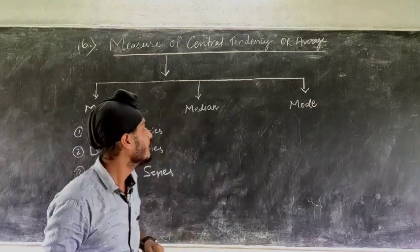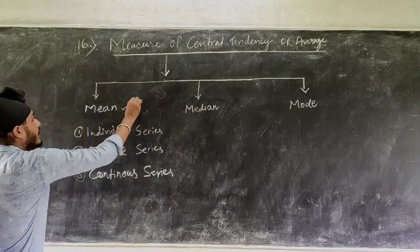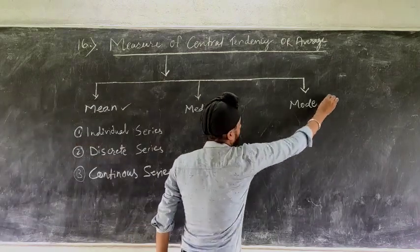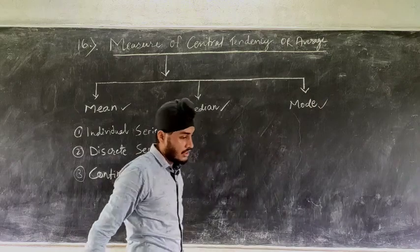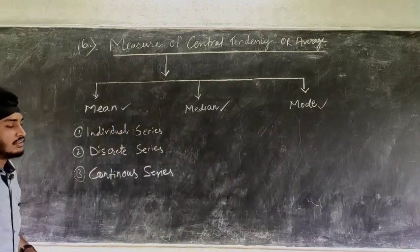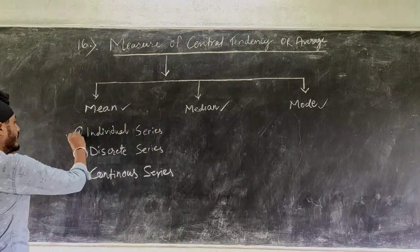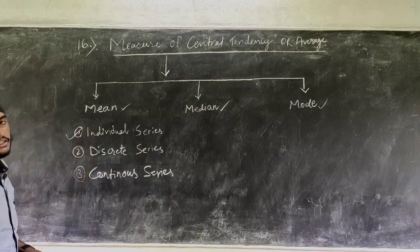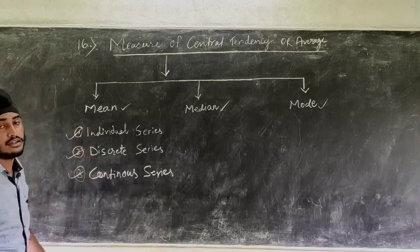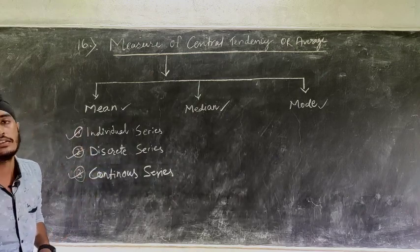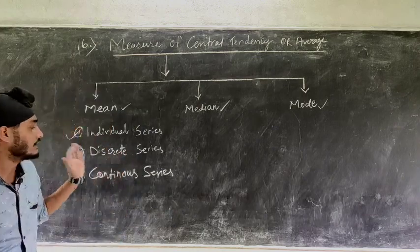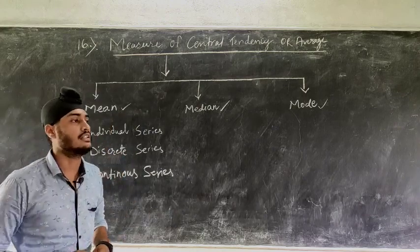In this chapter we will study about mean, median and mode. First we will see about mean. Under mean you have to study individual series, discrete series and continuous series. One by one we need to see what is individual series, what is discrete series and what is continuous series.